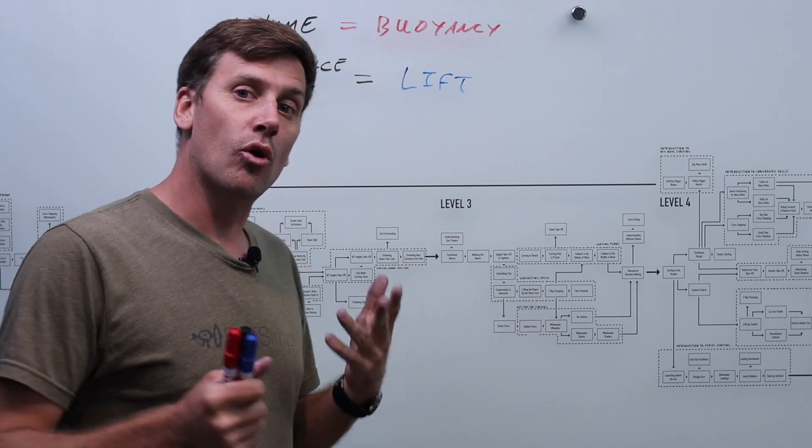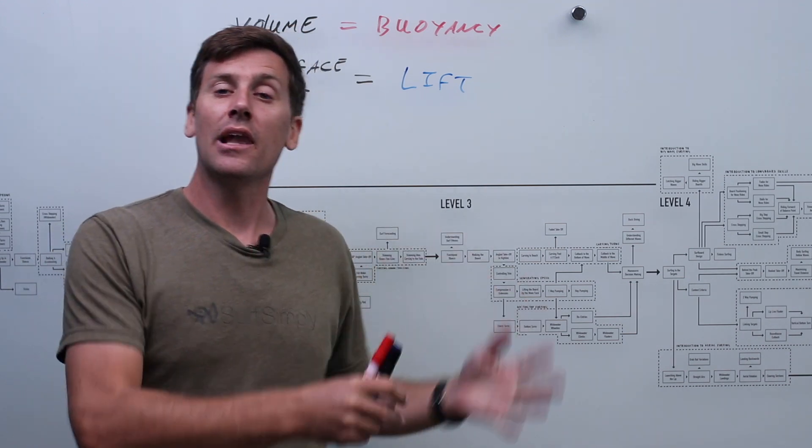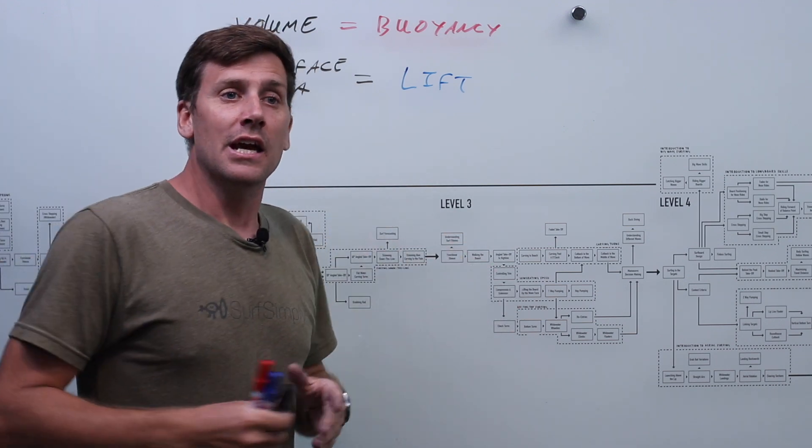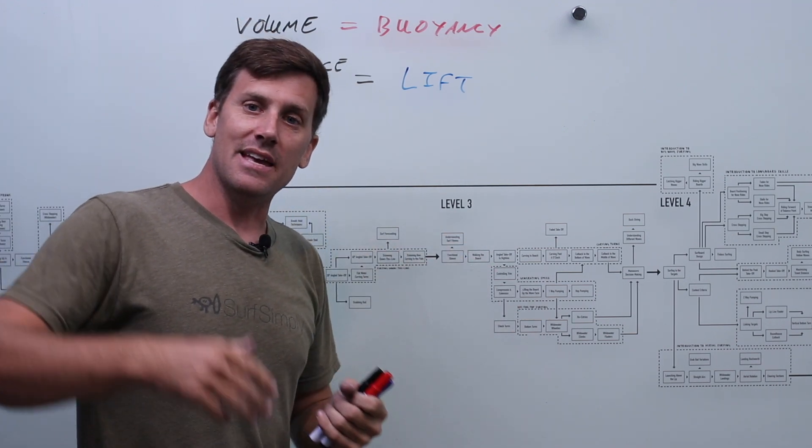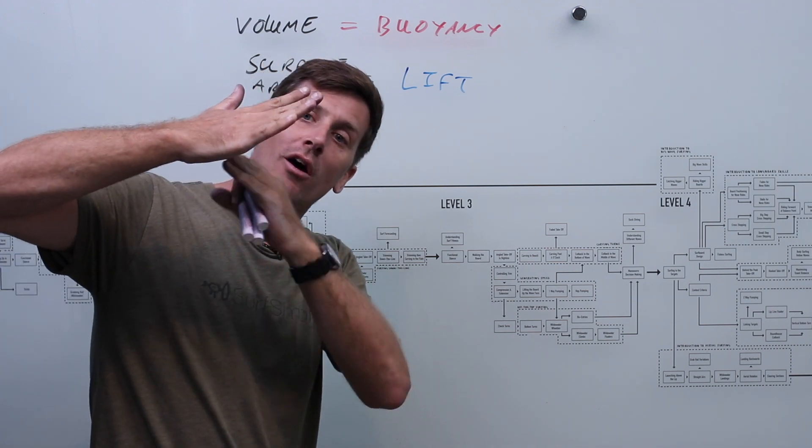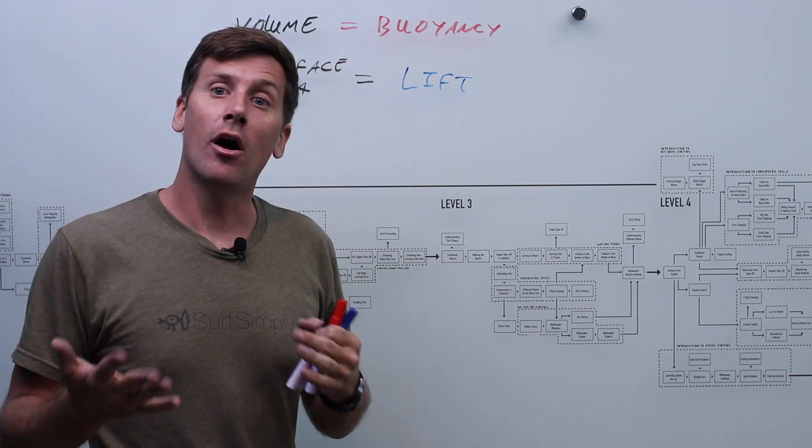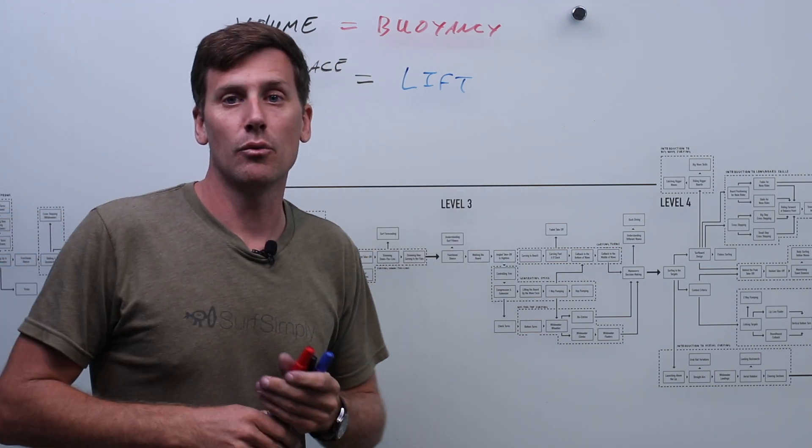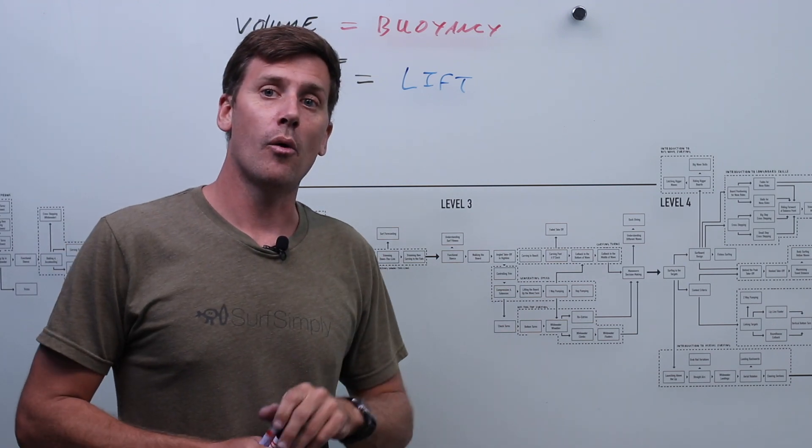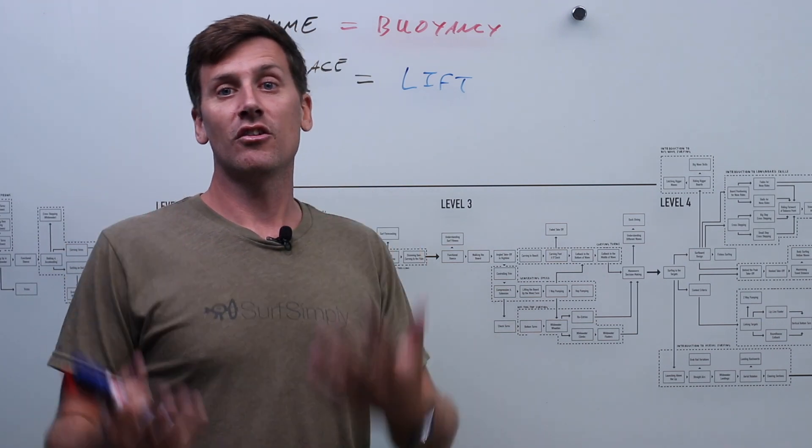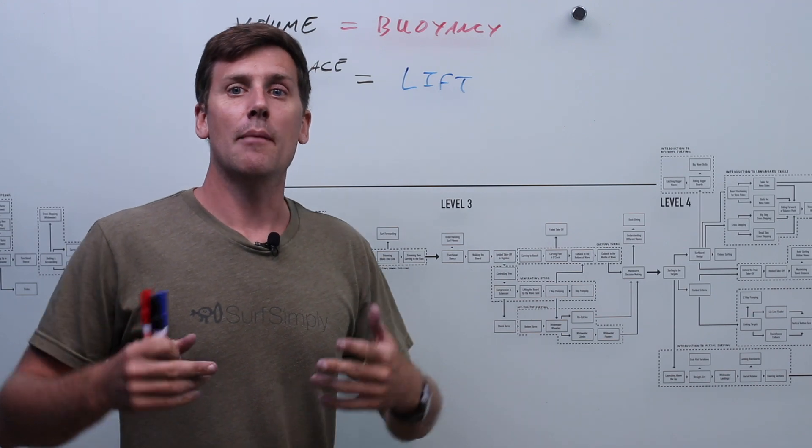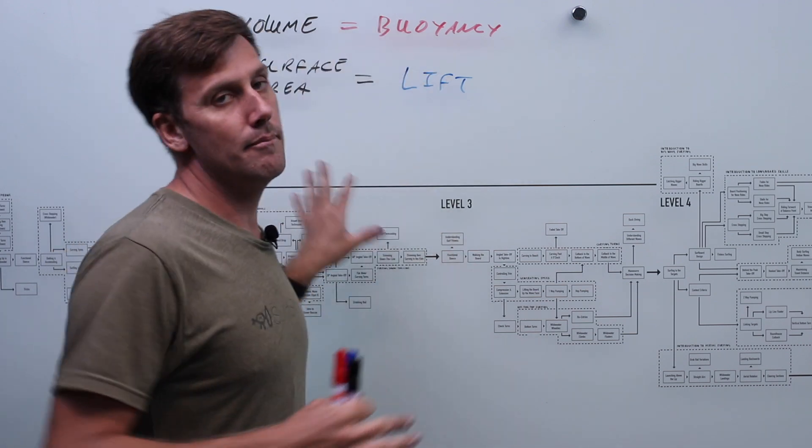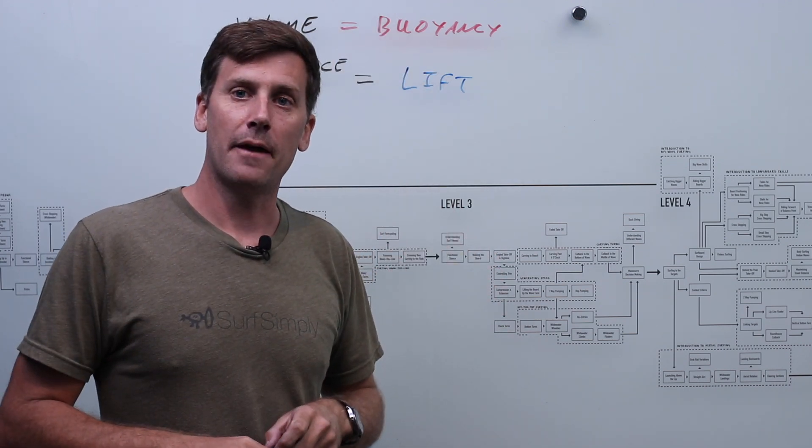Now where that can, you know, potentially cause problems is if you have a very light surfer on a very wide, high surface area board, you know, what you may end up with is such a small part of the board in contact with the water that it could become quite hard to surf. You know, it might not have very much rail in contact with the water, say, and it may become a little hard to control. And this is why boards that are designed to operate at high speeds, or boards that are surfed by smaller people generally have those metrics reduced down a little bit.